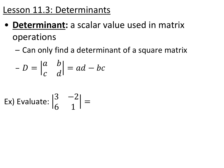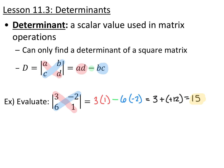To find a determinant of a 2x2, start in the upper left-hand corner and multiply down — so you get a times d — then subtract and go to the bottom left corner and multiply up, giving minus b times c. So: multiply down, subtract, multiply up. For example, evaluating the determinant of the matrix 3, negative 2, 6, 1: multiply down gives 3 times 1 which is 3, then multiply up gives 6 times negative 2 which is negative 12, so we end up with 3 minus negative 12, or positive 15.